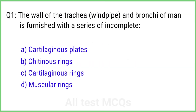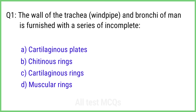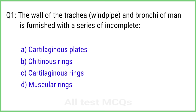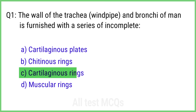Question 1. The wall of the trachea, windpipe and bronchi of men is furnished with a series of incomplete? The right answer is option C: Cartilaginous rings.